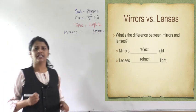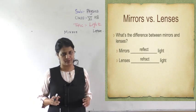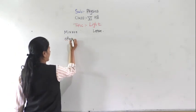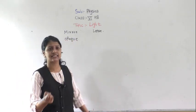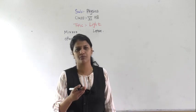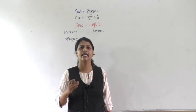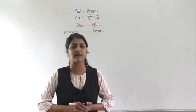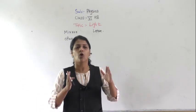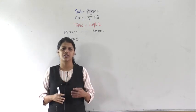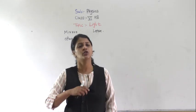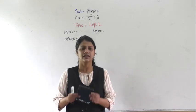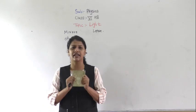A mirror is an opaque object. We have already discussed what is meant by an opaque object, transparent material, and translucent material. An opaque object is one which does not allow light to pass through it. Now, if you look here, this is a plane mirror.